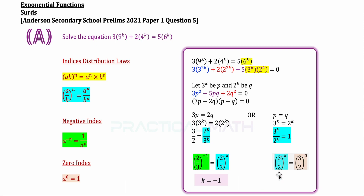On the left, applying the same distribution law highlighted in blue, we have 3 over 2 to the power of k. On the right, we rewrite it as 3 over 2 to the power of 0. Both sides now share the same base of 3 over 2, so the powers must be equal, giving us k equals 0 for the second solution. That is the complete answer for part A.